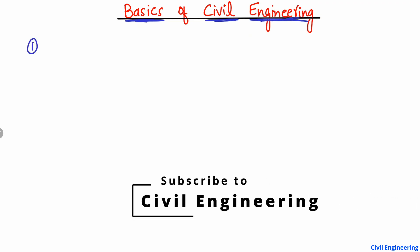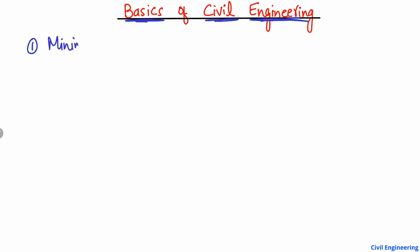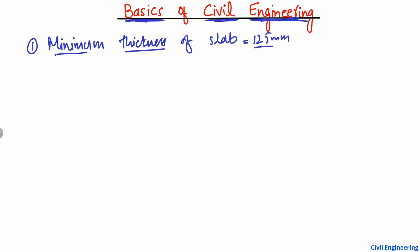The first point is regarding the minimum thickness of the slab. You should keep in mind that the minimum thickness of a slab allowed for construction is 125 millimeters.